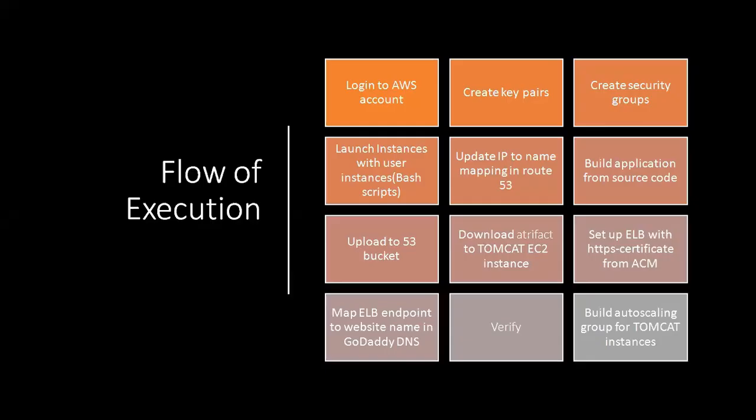The flow of execution for this project will be: log in to the AWS account, create key pairs, create security groups, launch instances with user data, update IP-to-name mapping in Route 53, build the application from source code, upload artifacts to S3 bucket, download artifacts to the Tomcat EC2 instance, set up ELB with HTTPS using the certificate from ACM, map the ELB endpoint to the website name in GoDaddy DNS, verify, and finally build the auto scaling group for the Tomcat instances.